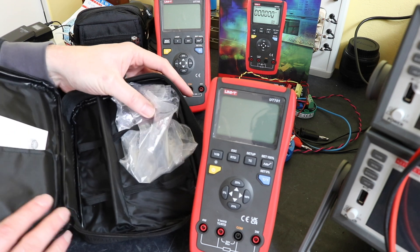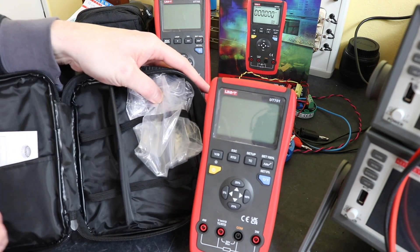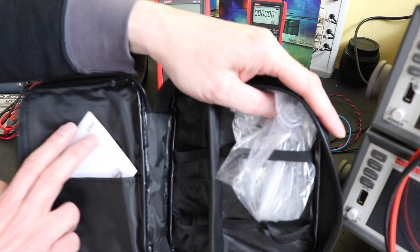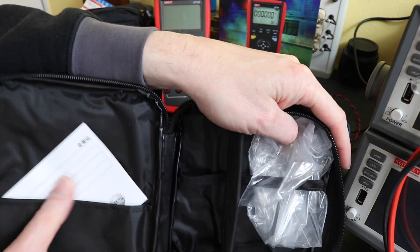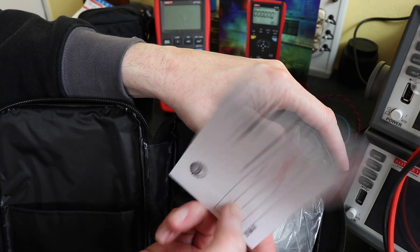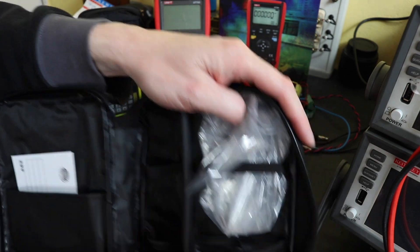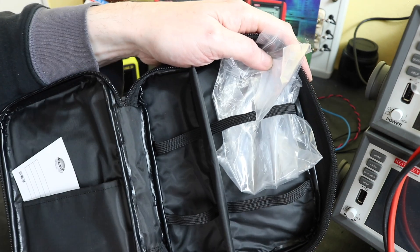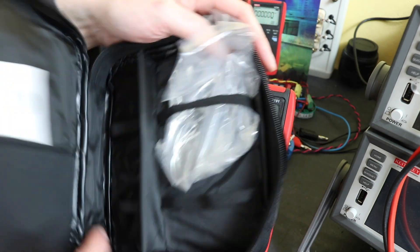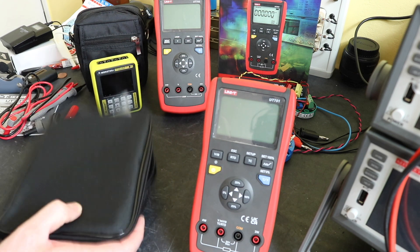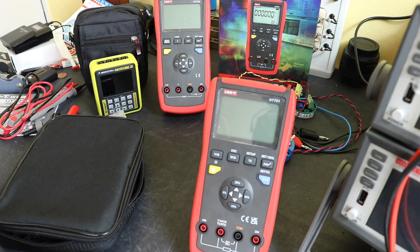And in the actual pouch itself you've got a little pocket here. A little conformity card again, all in Chinese. And then you've got loops to keep the meter sound and a set of loops for the leads themselves as well. And that is what you get in the kit. That is it. No thrills with this one I'm afraid.